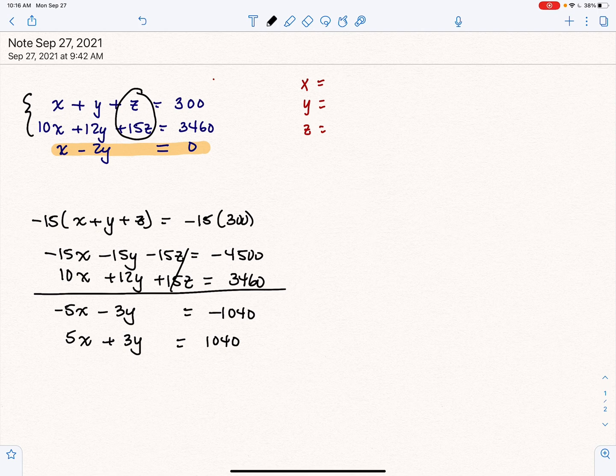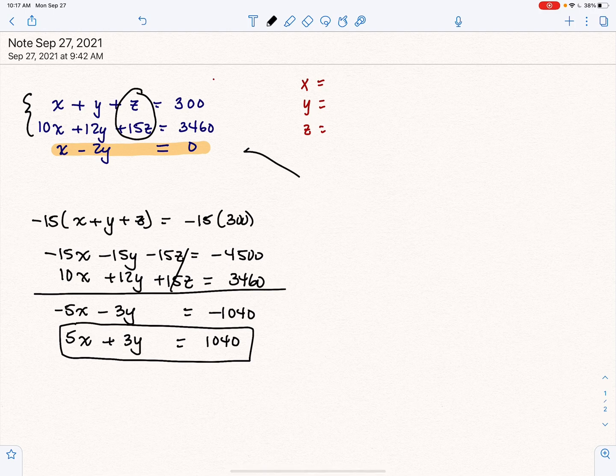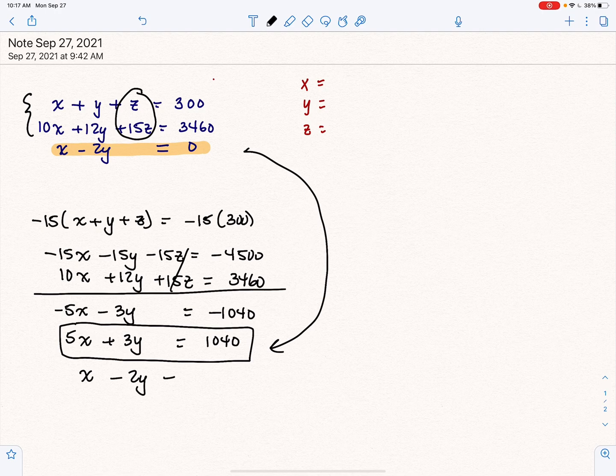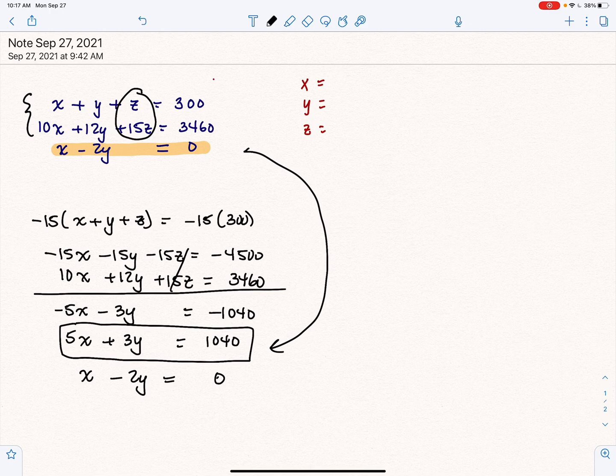Now, we have an equation with x and y only. But I have another equation with x and y only. So now, I'm going to take that equation and I'm going to pair it with that one. So that system, that mini system, is going to allow us to find x and y.